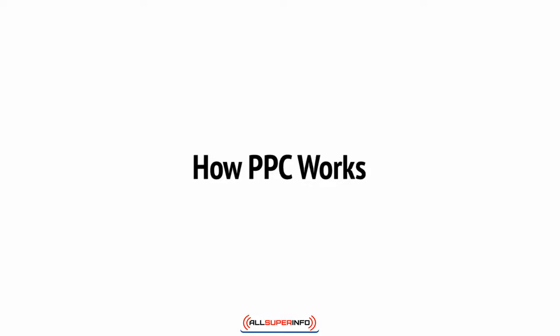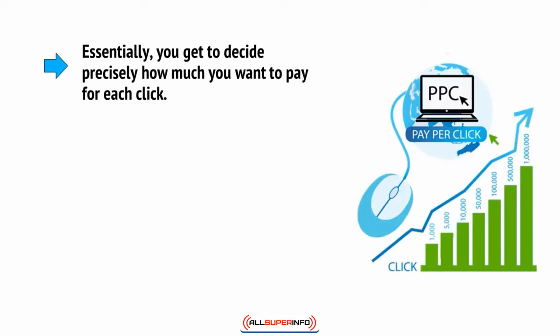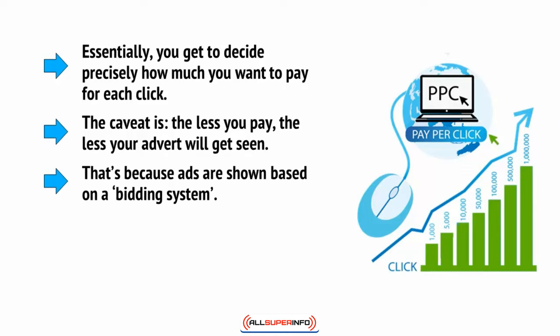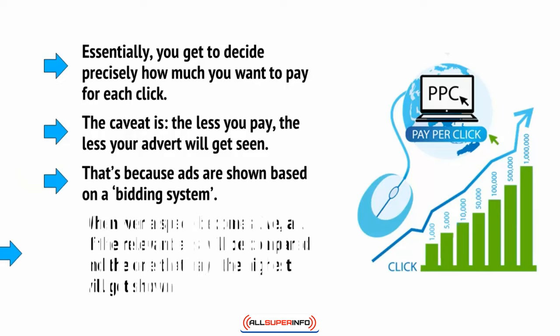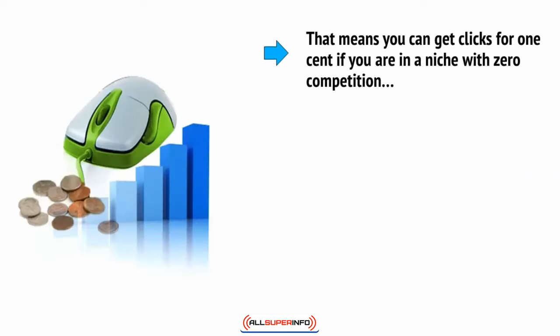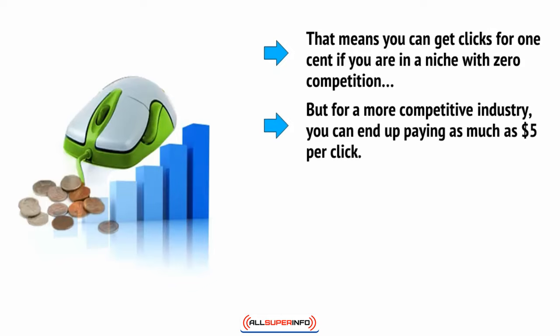So how much exactly do you pay for each click? And where will your ads show? Well, essentially you get to decide precisely how much you want to pay for each click. The caveat is, the less you pay, the less your advert will get seen. That's because ads are shown based on a bidding system. Whenever a space becomes live, all of the relevant ads will be compared and the one that pays the highest will get shown. That means you can get clicks for one cent if you're in a niche with zero competition, but for a much more competitive industry, you can end up paying as much as $5 per click.